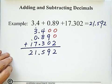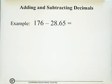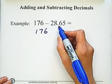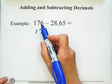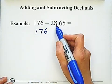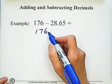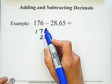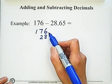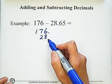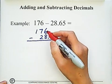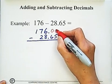The second example is subtraction: 176 minus 28.65. We write 176 subtract 28.65. Because the 6 in 176 is the ones digit and 8 is the ones digit in 28.65, we need to line them up. For the whole number 176, the decimal is on the right side of the ones digit. To subtract 0.65, we still need to add zeros after 176, so 176.00.